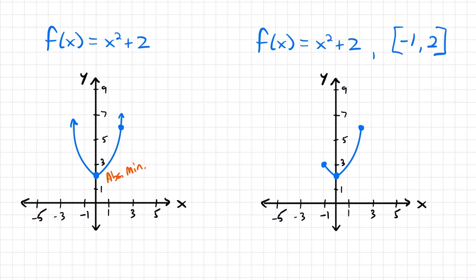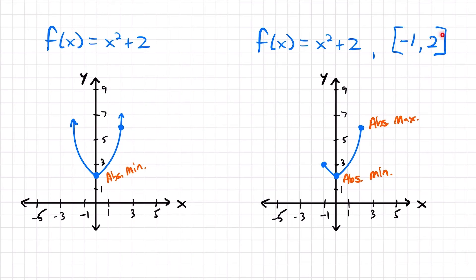You can see why we have the need to close off our functions. Take the same function but now on the interval from negative 1 to 2, including those endpoints. Now we've cut off all values not between negative 1 and 2, and we do have an absolute maximum. We still have the absolute minimum at (0, 2), but now we also have an absolute maximum at (2, 6). The moment you remove the interval and return to the original function, you no longer have that maximum.